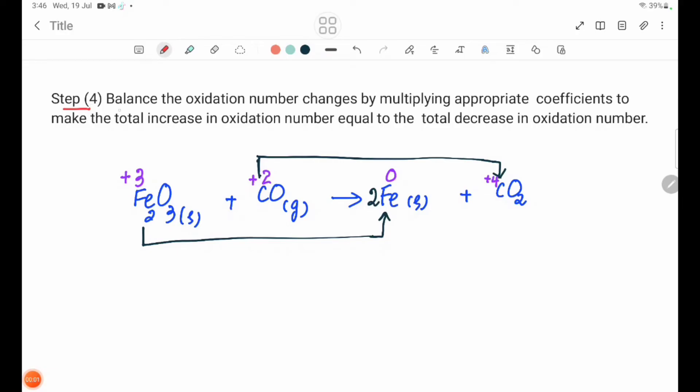Step 4: Balance the oxidation number changes by multiplying appropriate coefficients to make the total increase in oxidation number equal to the total decrease in oxidation number.